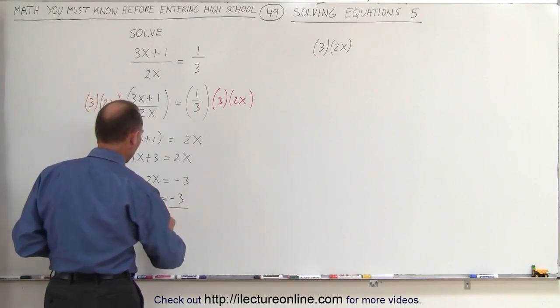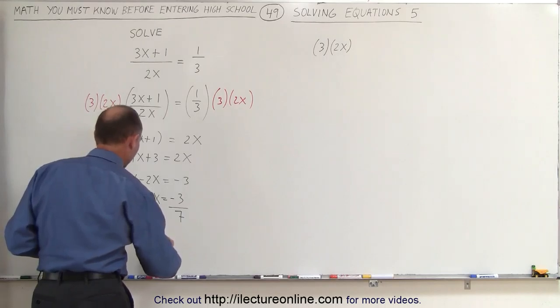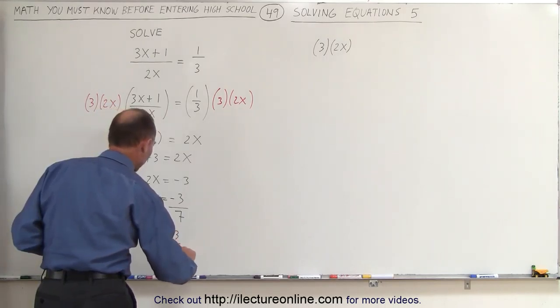And then dividing both sides by the coefficient in front of the variable, in this case the x, we end up with x is equal to minus 3 over 7.